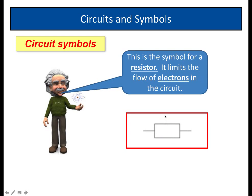This is the symbol for a resistor. Very simple. It's a rectangle. Now, what a resistor does, it limits the flow of electrons in the circuit. It slows them down. It resists their flow. This is the symbol for a resistor.